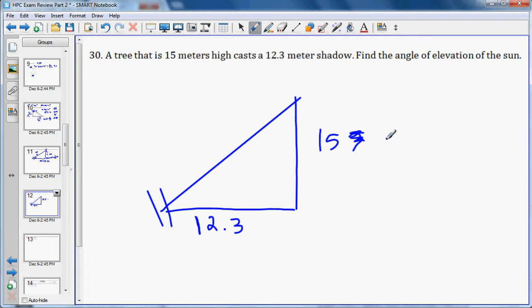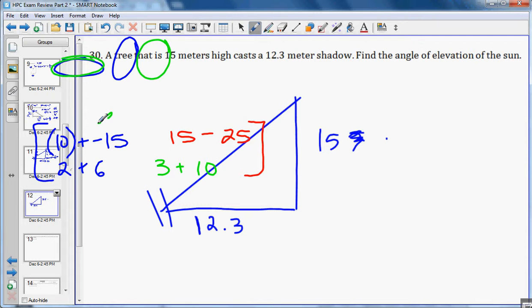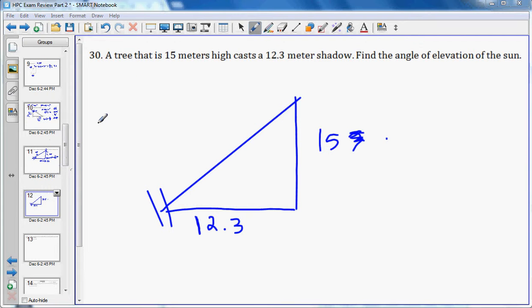Now we know this is the opposite side and this is the adjacent side. So that tells us to use the tangent. So tangent of this angle we don't know, we'll call it x, is equal to the opposite over the adjacent.